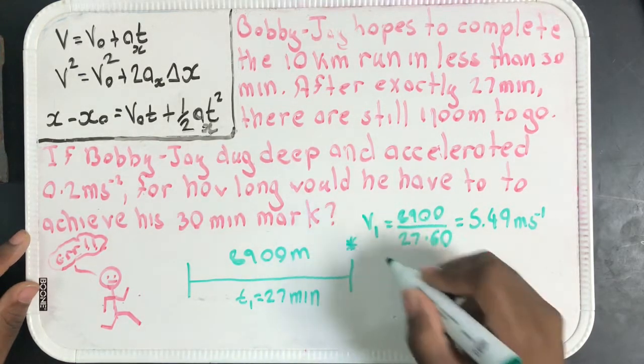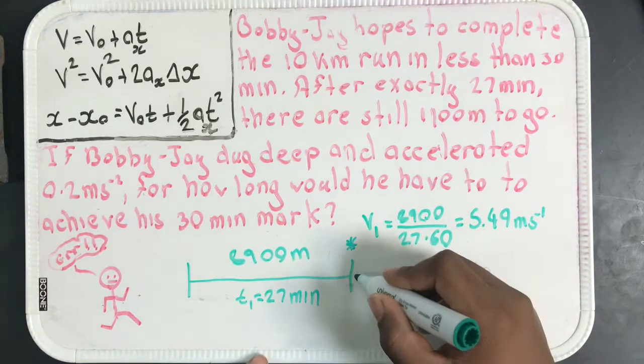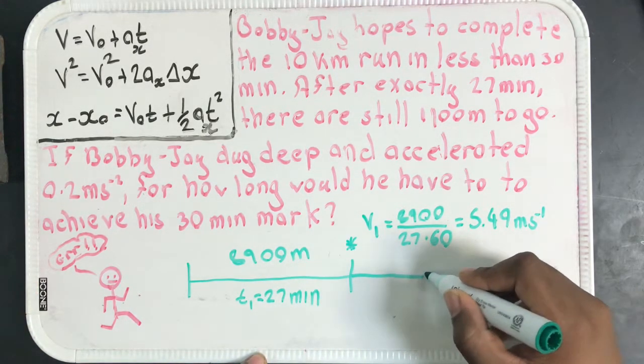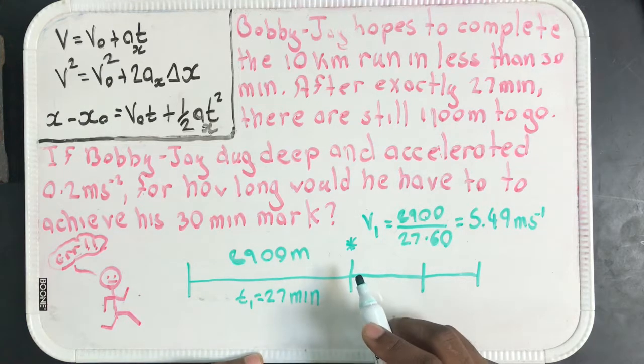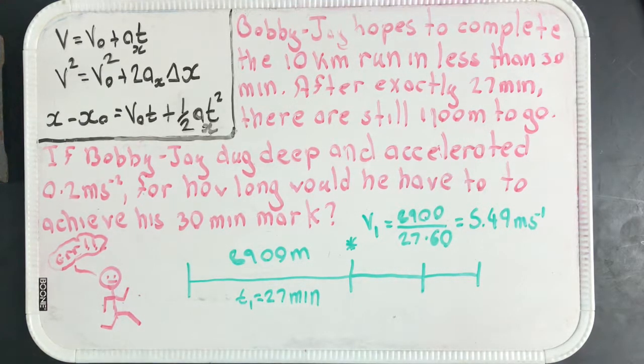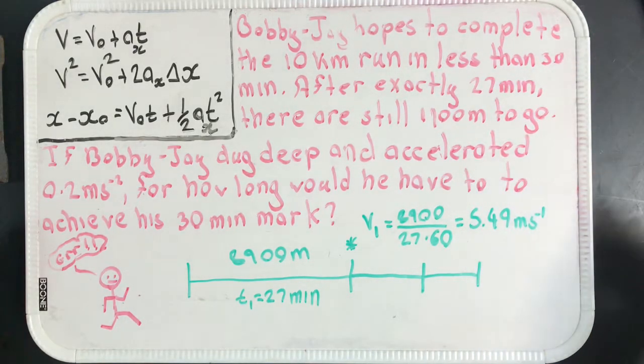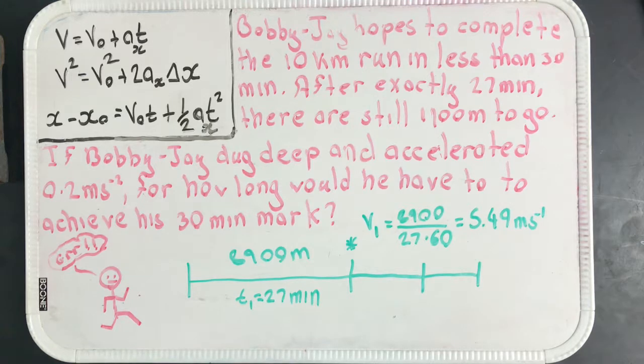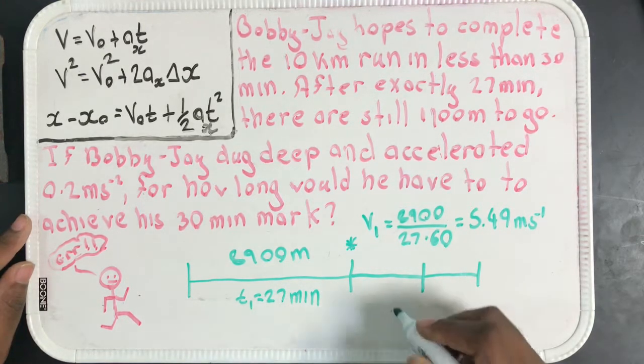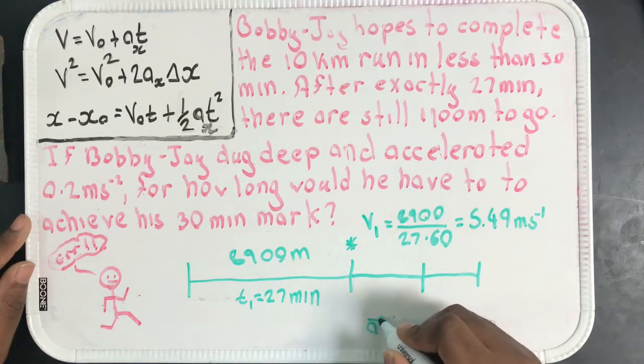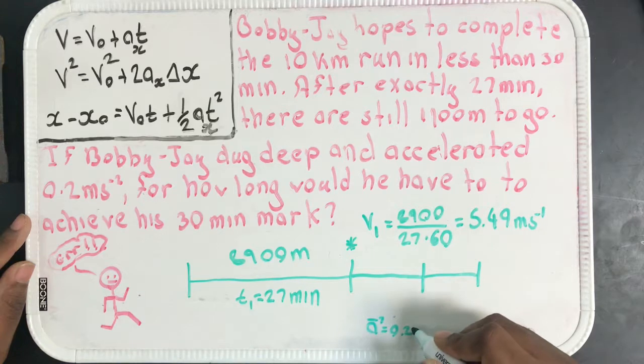Now this is a critical point here because at this point Bobby J accelerates. At 27 minutes, this is exactly when Bobby J accelerates. After 27 minutes there's still 1100 meters to go and Bobby J dug deep and accelerated 0.2 meters per second squared. So let's assume that exactly at 27 minutes, right here, this is where Bobby J begins to accelerate. For this portion Bobby J has this acceleration.